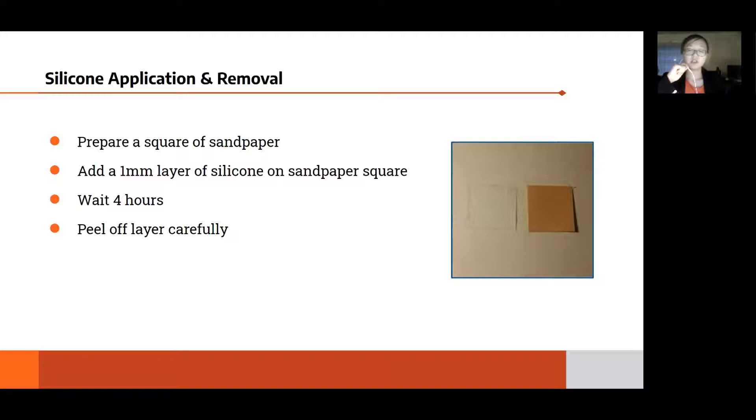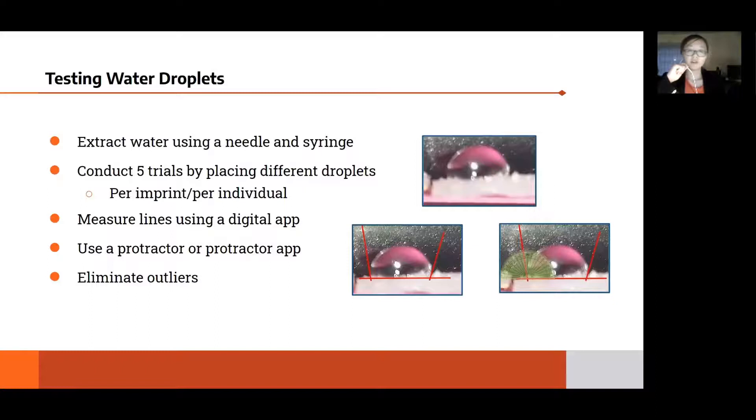When it was dry, we peeled off the layer carefully to make sure there were no tears and had enough surface area to test on. If the silicone could not be removed, the procedure was redone with oil to make sure it could peel off easier. A successful application and removal should look like the picture on the right.